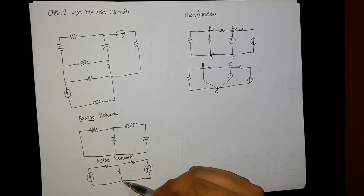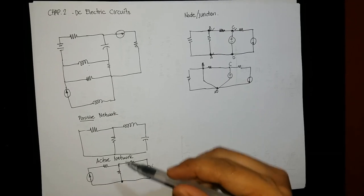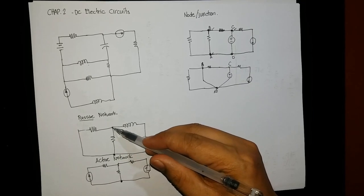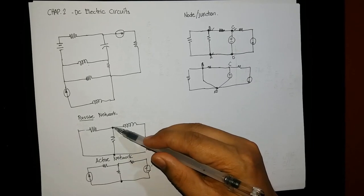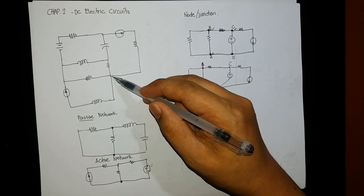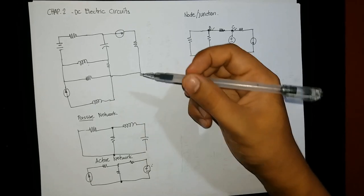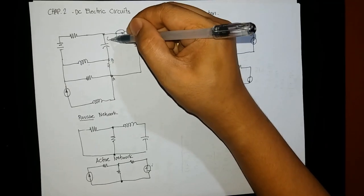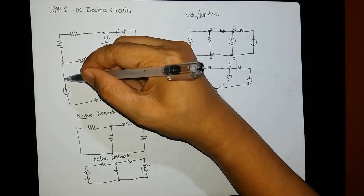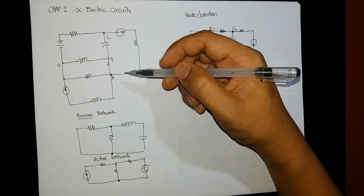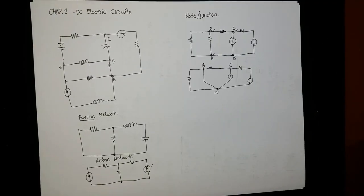For this circuit we have two nodes. For this network, we have this node and this node — so two nodes. How many nodes do we have in this circuit or network? We have node A, node B, node C, and these two nodes considered as a single node D — so for this circuit we only have four nodes instead of five.